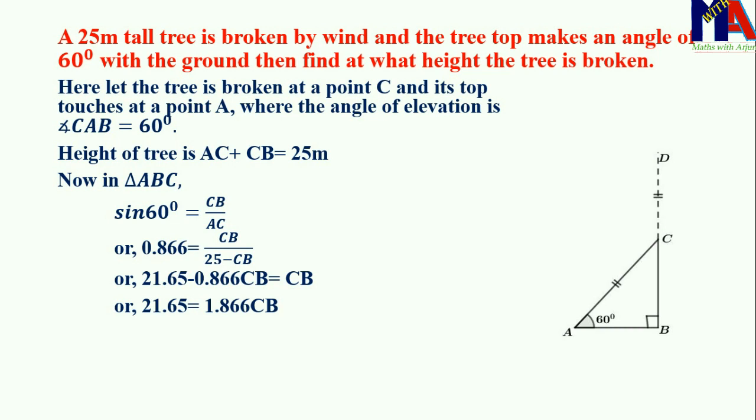Then 1 plus 0.866 equals 1.866 CB. Then CB equals 21.65 divided by 1.866, that is 11.60 meters.